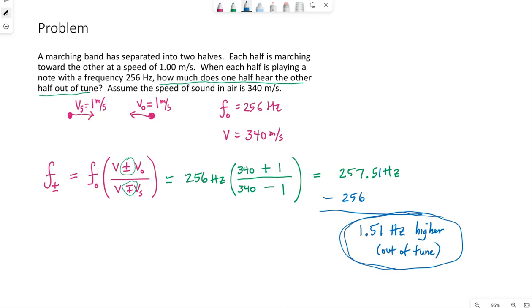So one half of the marching band will hear the sound coming from the other half as a frequency of 1.51 hertz higher. Here we go.